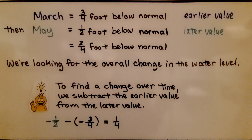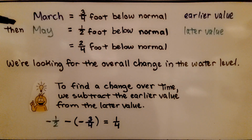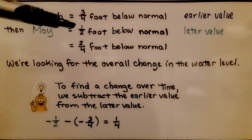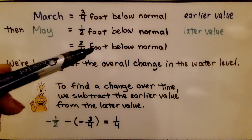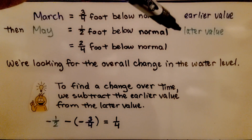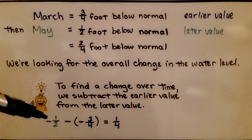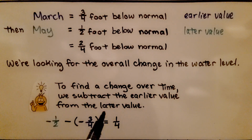Let's understand how we ended up with that equation. We know that in March it was three fourths foot below normal — that's the earlier value. Then in May, a couple months later, it was a half foot below normal, still below normal. The May value is the later value. One half foot is like two fourths foot, giving them the same denominator. To find a change over time, we subtract the earlier value from the later value, so the later value is our minuend. That's how we ended up with negative one half as the first number, subtracting negative three fourths, giving us positive one fourth.